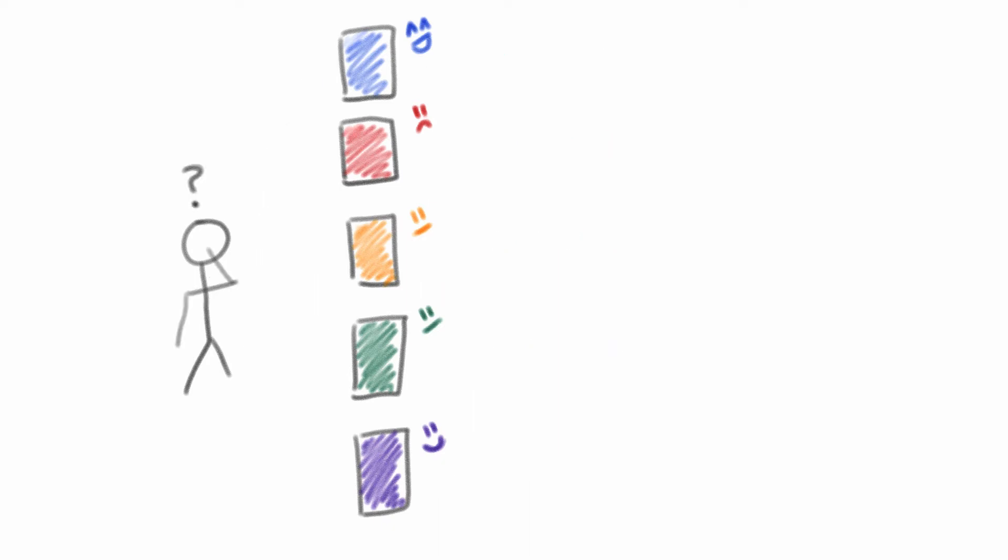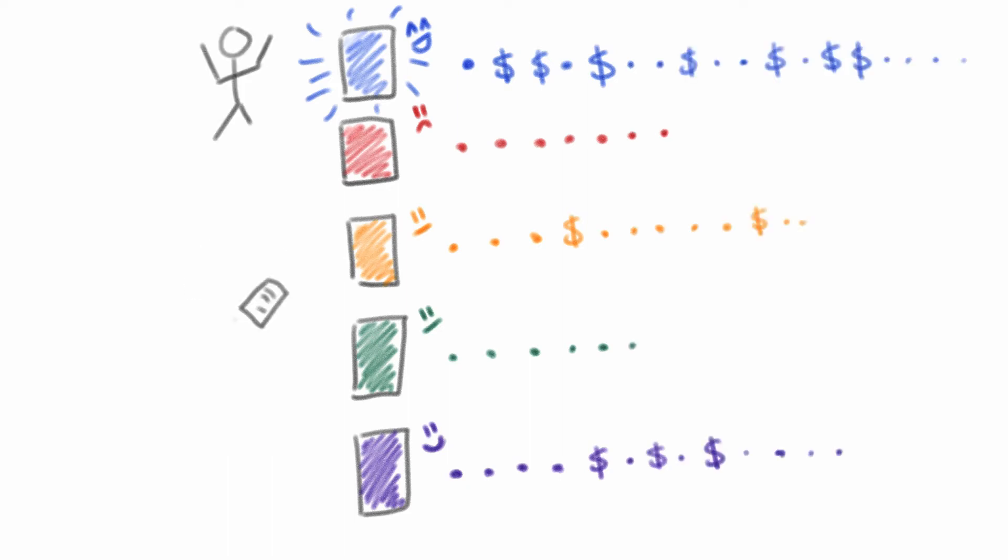Perhaps there is some hybrid strategy, one in which you use information you learn about each machine as you go. If you find a slot machine that has given you several jackpots, you remember that, and you adjust your plan to spend more time at that machine than some of the others that have never given you a jackpot.